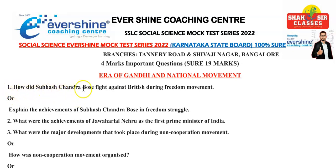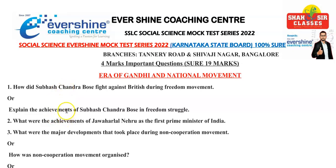First question: how did Subhash Chandra Bose fight against the British during the Freedom Movement? Now here, where you see a choice marked 'or', it means these are not two separate questions — both questions are the same. The way of asking the questions is different, but you should write the same answer.